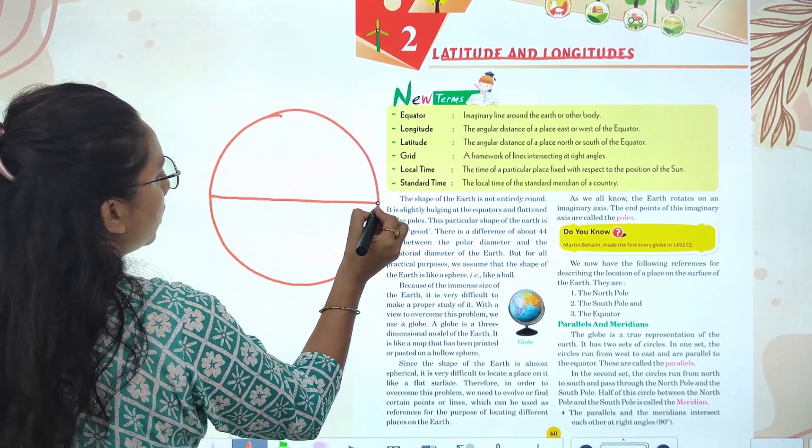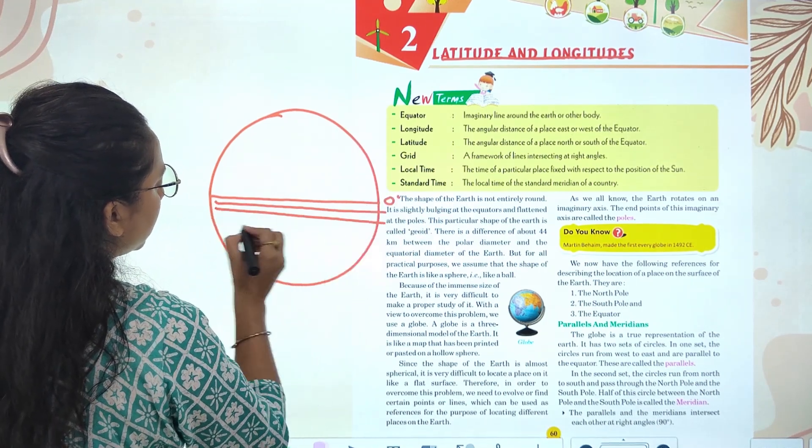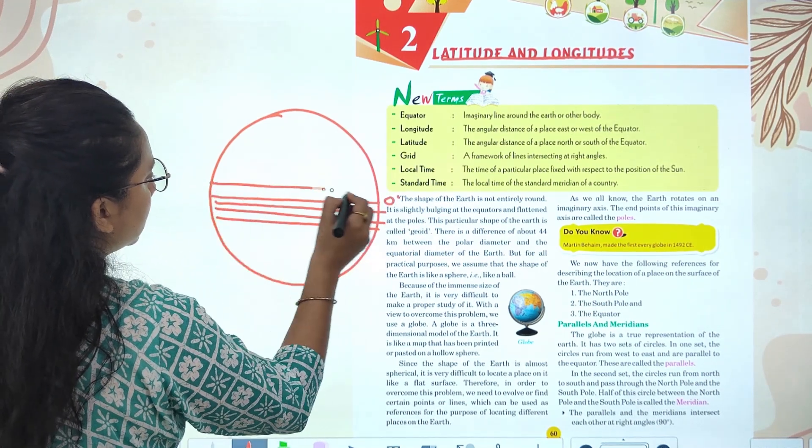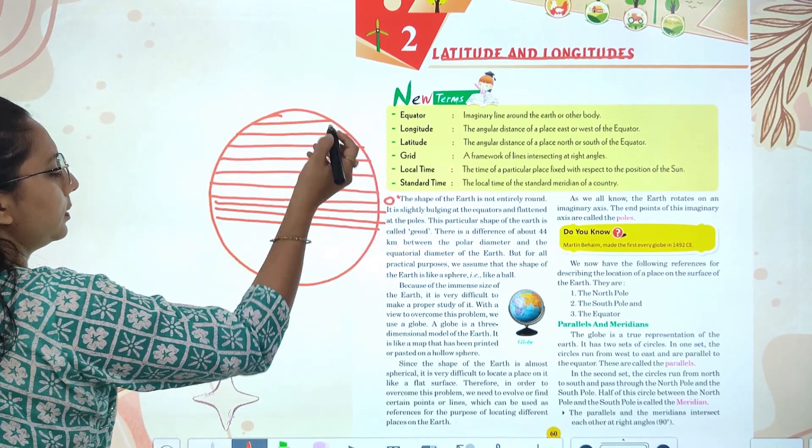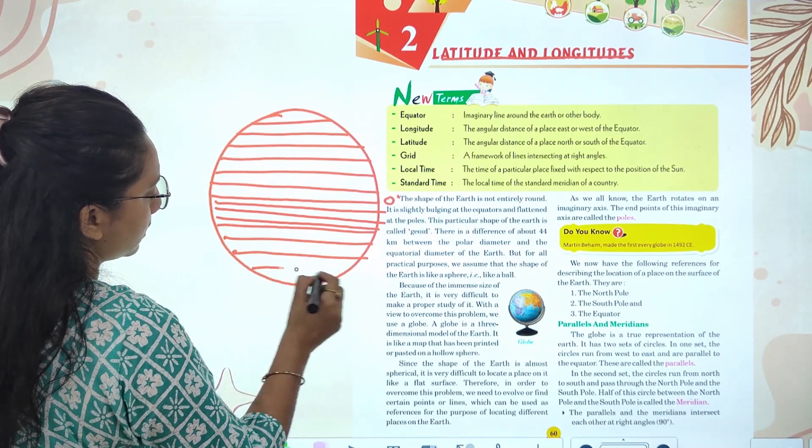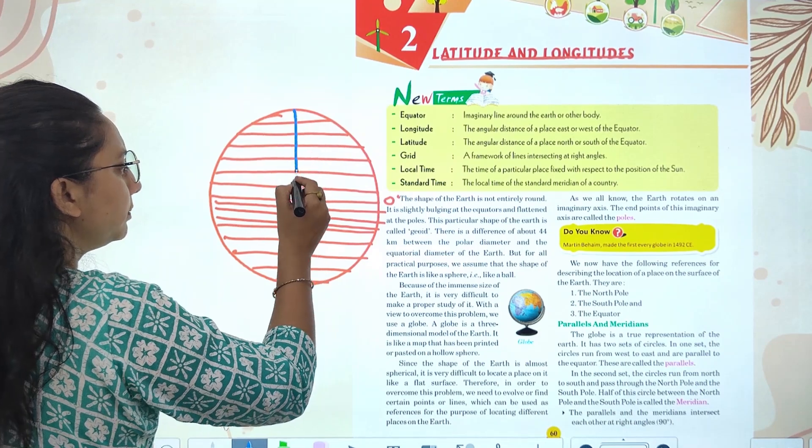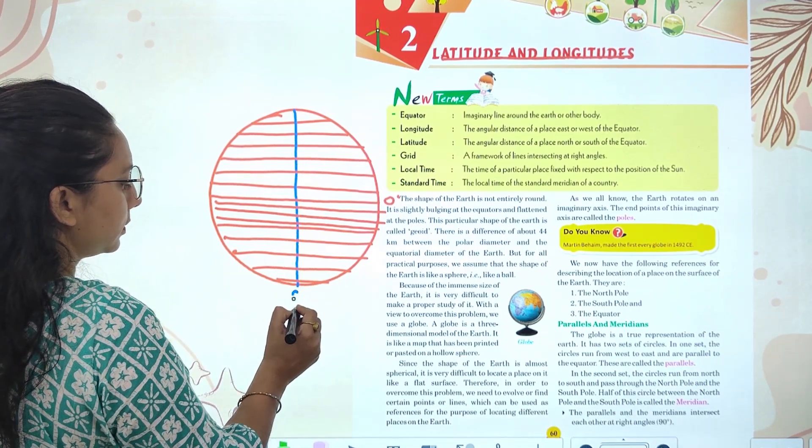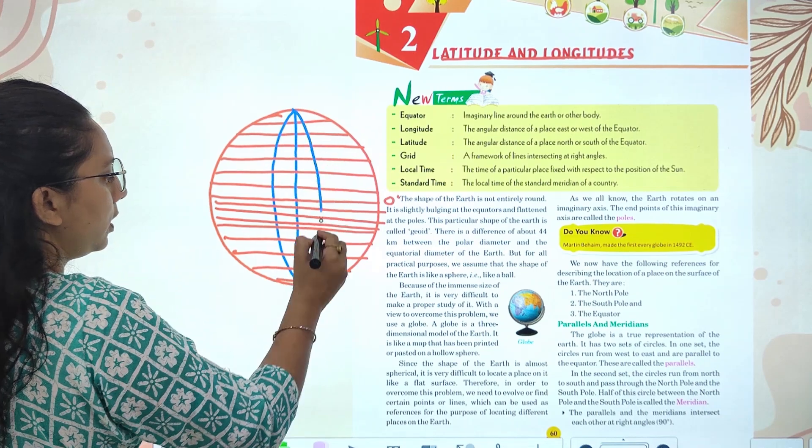And this is zero degrees. What are your whole latitudes? And this is what are your longitudes, they are known as longitudes.